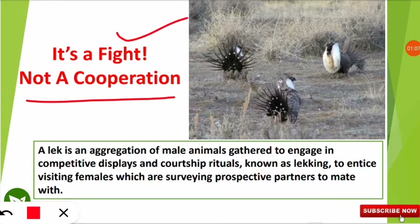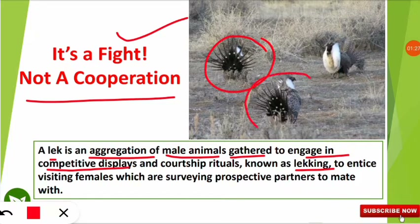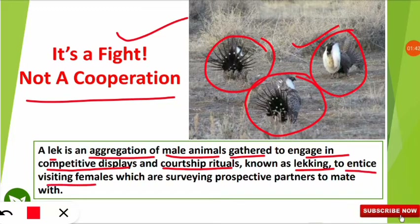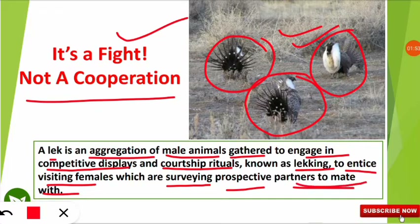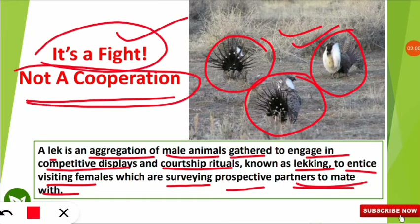A lek is an aggregation — a gathering of a group of male animals — that come together to engage in competitive displays. All males of a species aggregate at one place and display their courtship rituals, their power, through dance and fighting. This is done to entice visiting females who are surveying prospective partners to mate with. This behavior is known as lekking, and it is a form of competition, not cooperation.